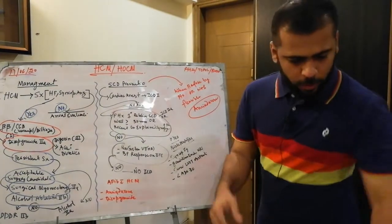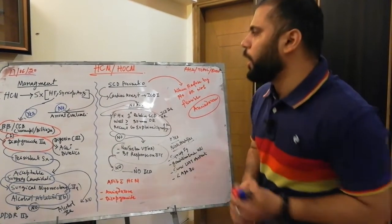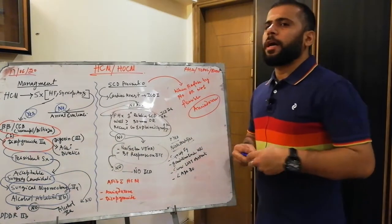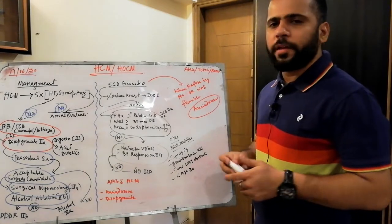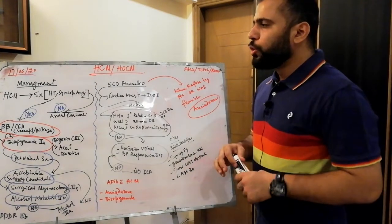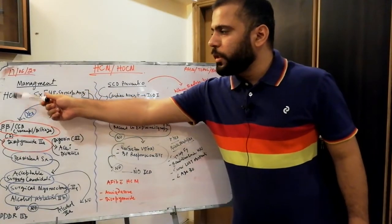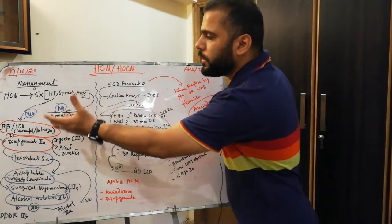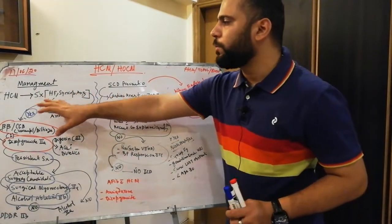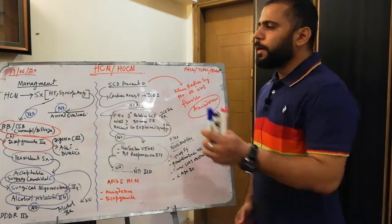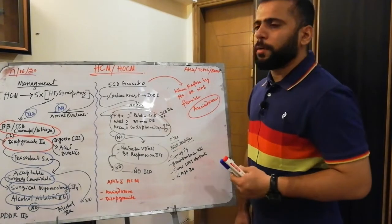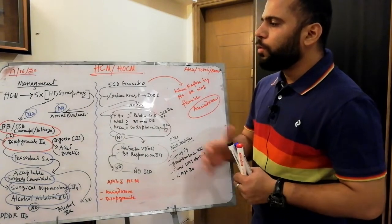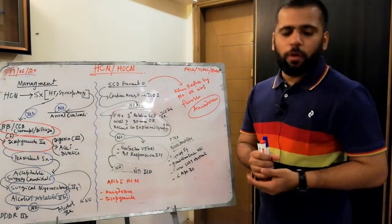Now we will discuss management and sudden cardiac death prevention in patients with hypertrophic cardiomyopathy. First, you must confirm the diagnosis of HCM. If your patient is diagnosed with HCM, assess symptoms — heart failure, syncope, and angina. If all symptoms are due to HCM, then give beta blockers and calcium channel blockers.